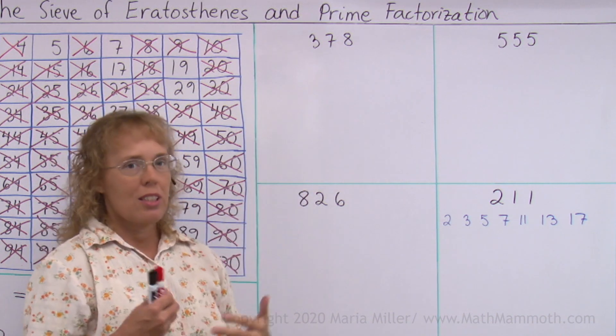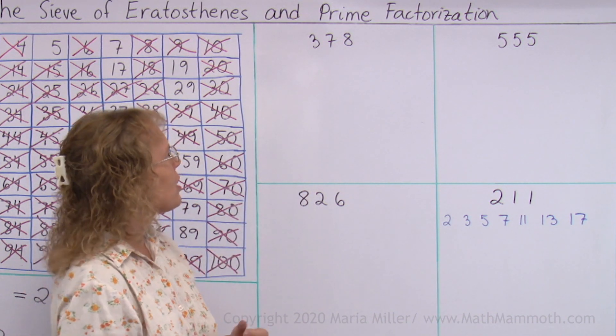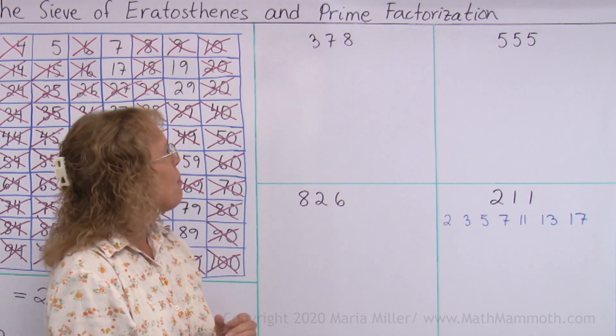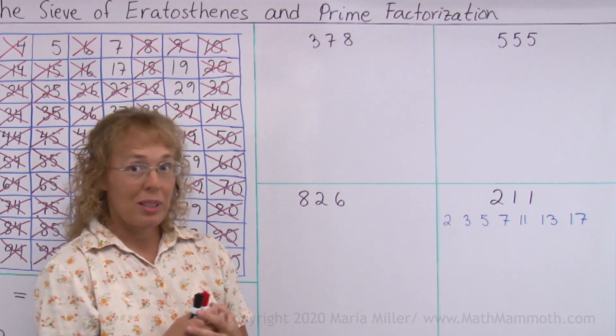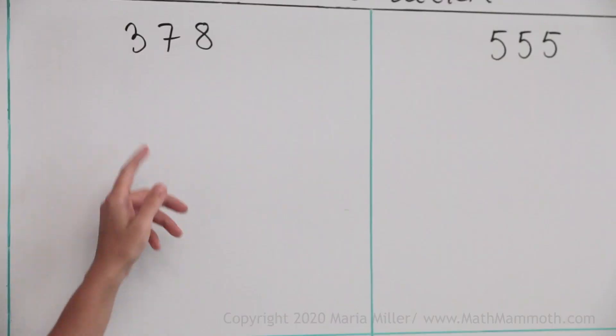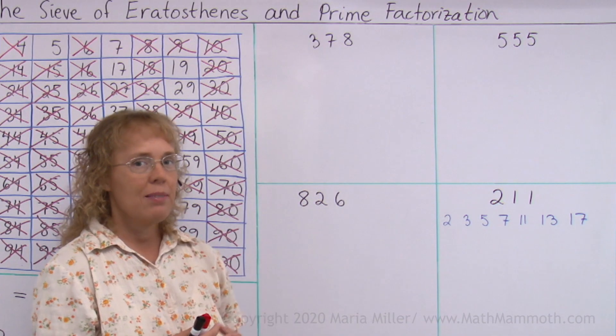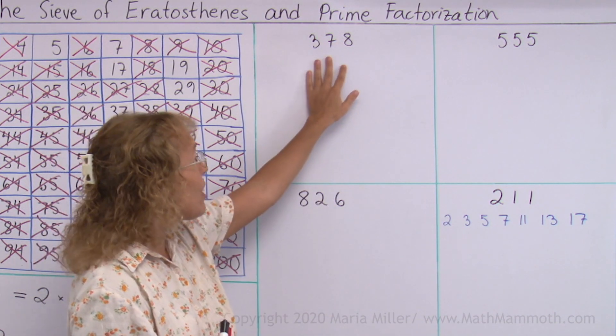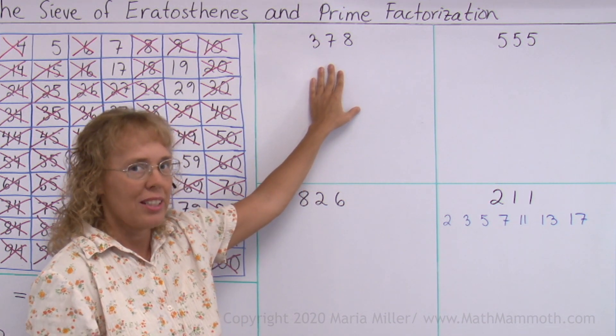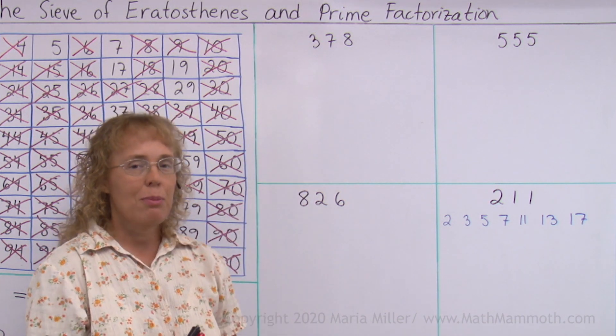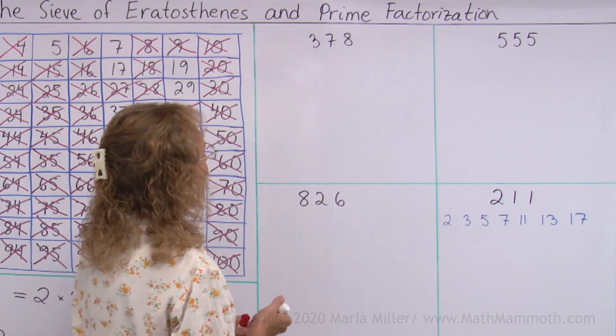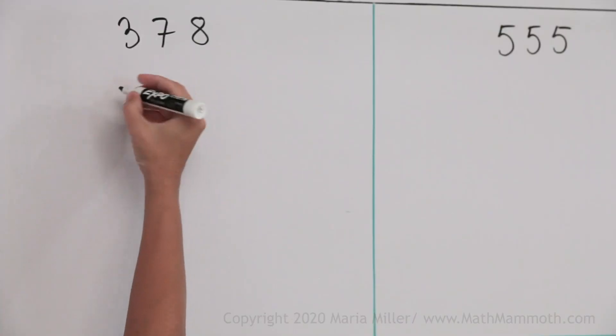378. Again, we could start factoring it by noticing that it is an even number, 2 times something. But there's another possibility too. If you add the digits, you get 18, and 18 is divisible by 3 and by 9, so the number itself is also divisible by both 3 and 9. That's the divisibility test for 3 and for 9. So I know it is 9 times something.